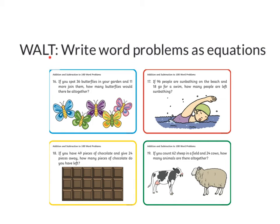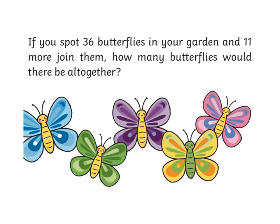We are learning to write word problems as equations. Let's have a look at this word problem. It says, if you spot 36 butterflies in your garden, and 11 more join them, how many butterflies would there be altogether?